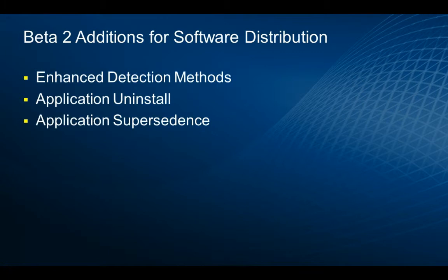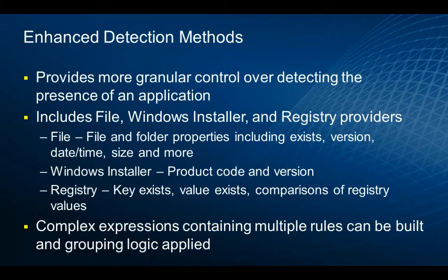Regarding our beta 2 additions for software distribution: we've enhanced our detection methods, created application uninstallation support, and added supersedence — something very important to IT departments today. Enhanced detection methods give the administrator more granular control around detecting the presence or absence of an application, looking at file, Windows Installer, or Windows Installer registry providers.